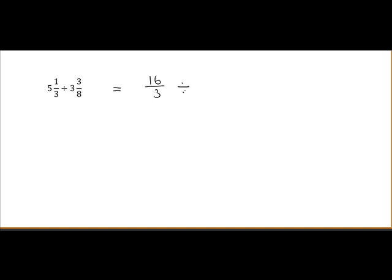That's divided by 3 and 3 eighths. So 3 is the same as 24 over 8. 24 over 8 plus 3 over 8 is 27 over 8. When dividing by fractions, we invert the fraction on the right and multiply. So it's 16 over 3 multiplied by 8 over 27.